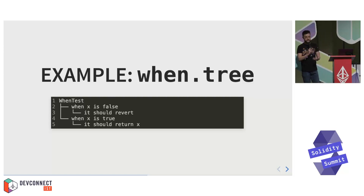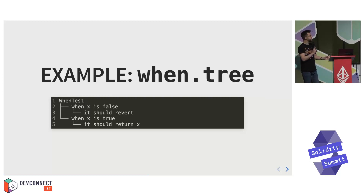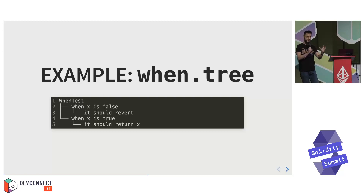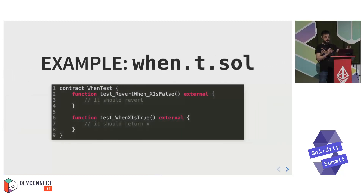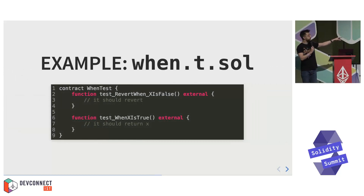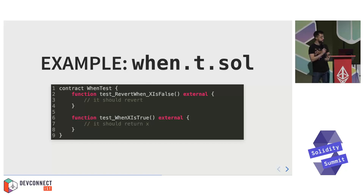You have a binary condition: when X is false or when X is true, and what should happen in either case. This is nice because you can share it with your non-Solidity team to give them an idea of what's happening. Useful for front-end development and whatnot. Once you have this, you use Bulloak to target it, and Bulloak will generate the code for you.